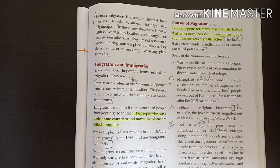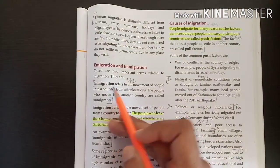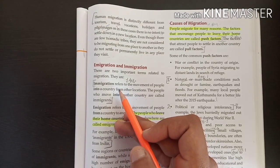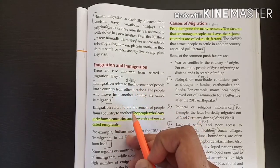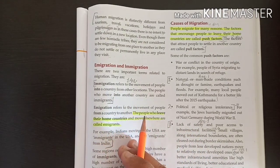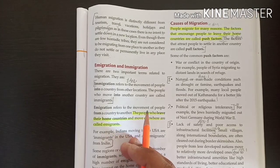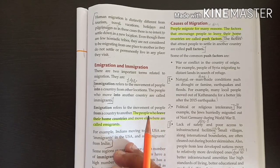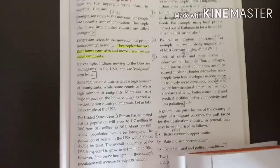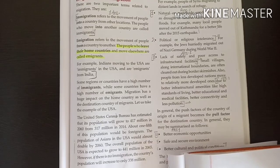We will discuss two most important terms of migration: emigration and immigration. Immigration refers to people moving into a new place, that may be a country, state or district. Emigration refers to people moving out to a new place. For example, when Indians move into the USA, they are immigrants in the USA, and when they move out from India, they are emigrants from India.